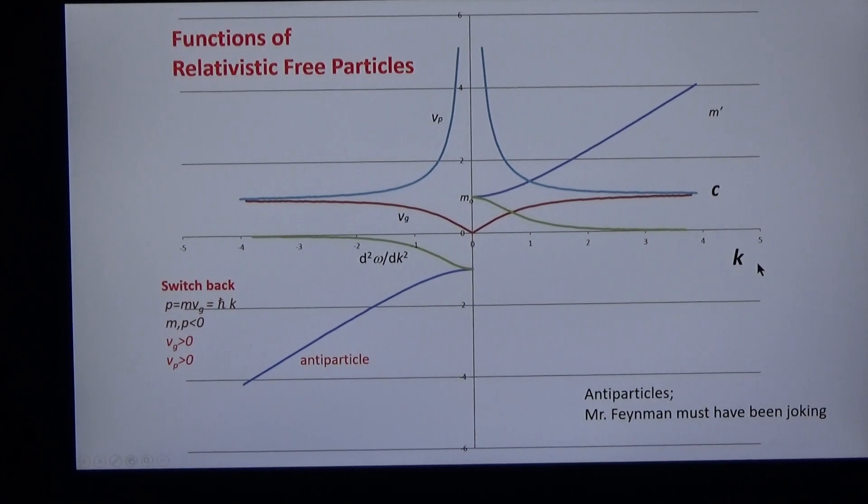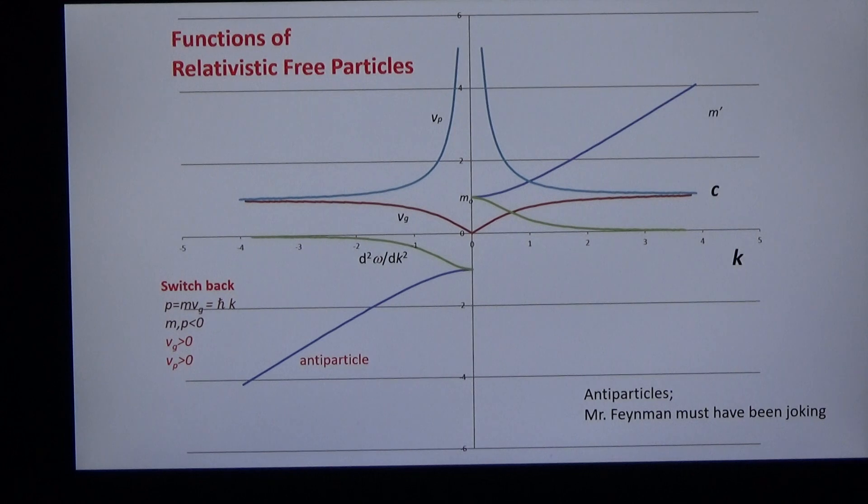I described these dispersion curves in previous years to the March meeting. For example, we find that Feynman's switching principle must be switched back. He claimed that nobody understands quantum mechanics, but we agree with his professor. You must be joking, Mr. Feynman.